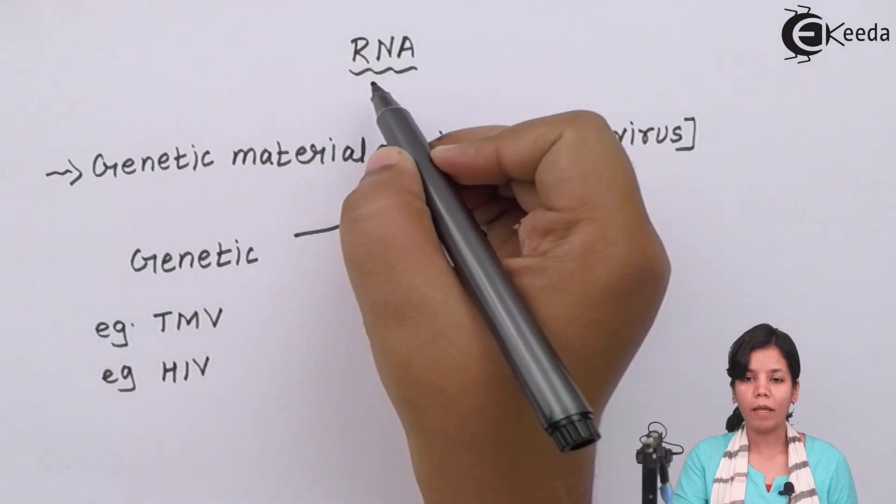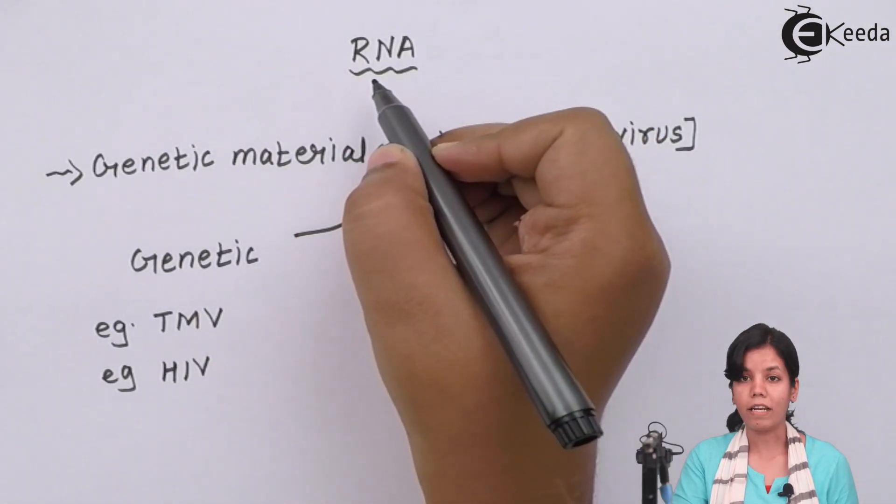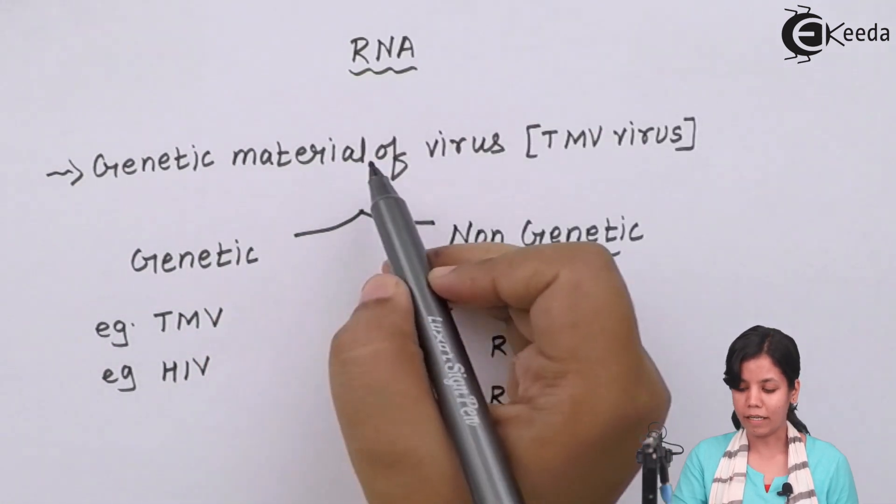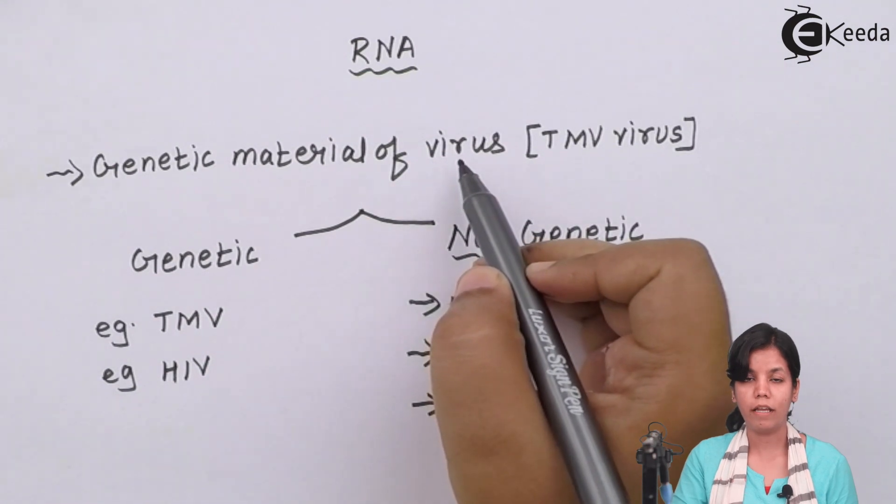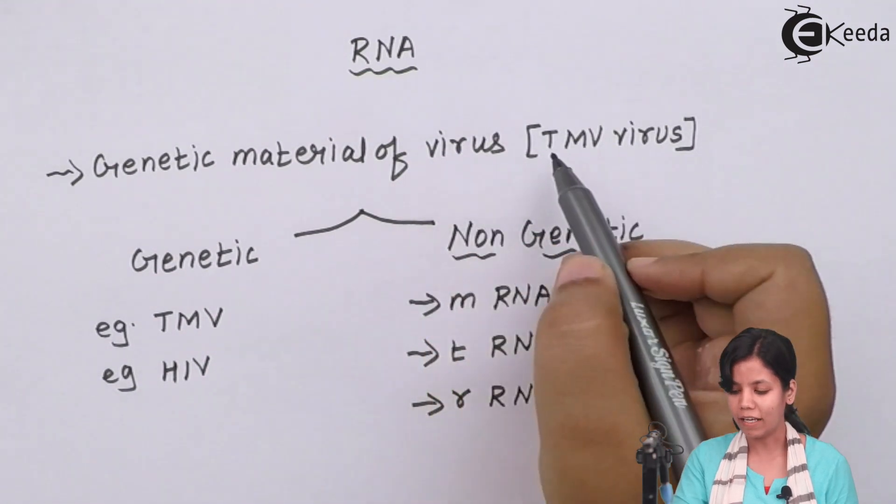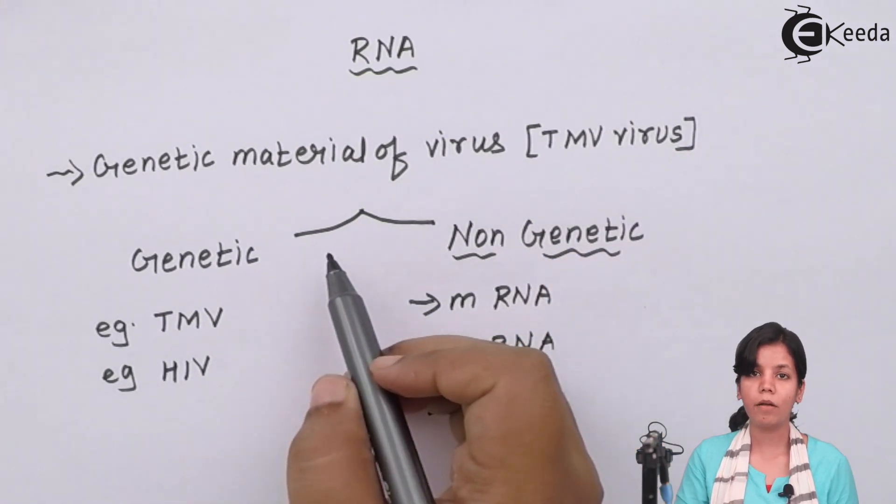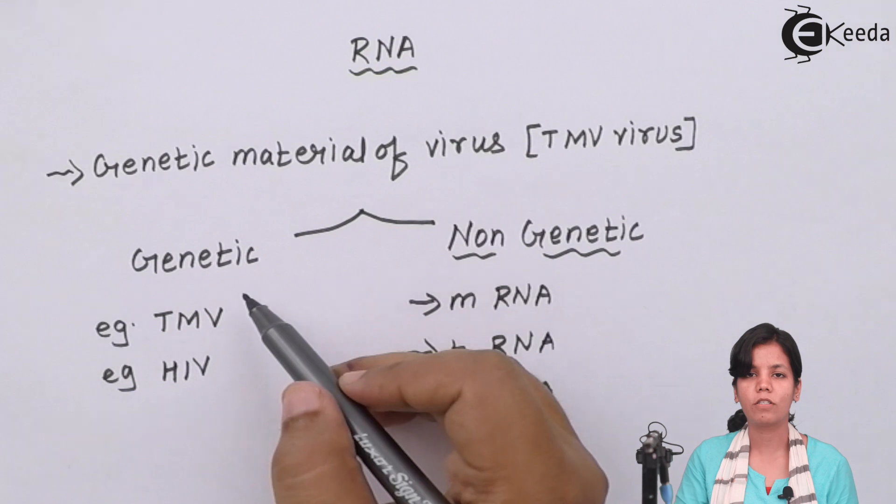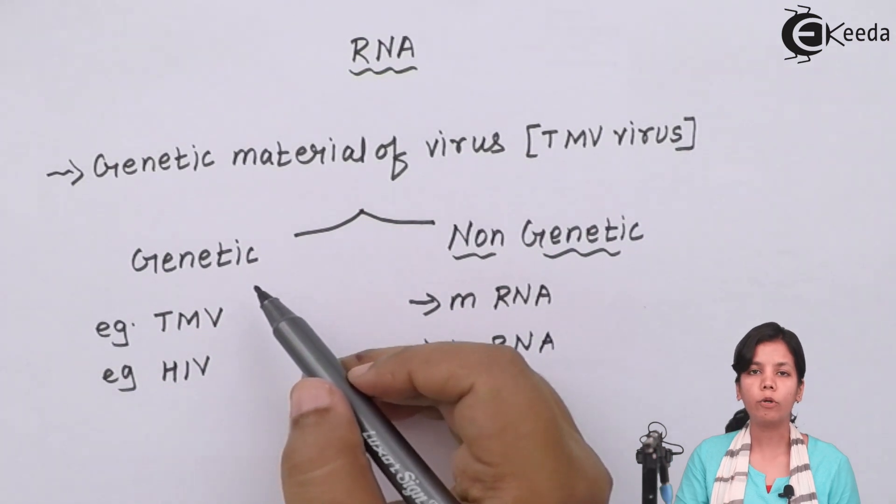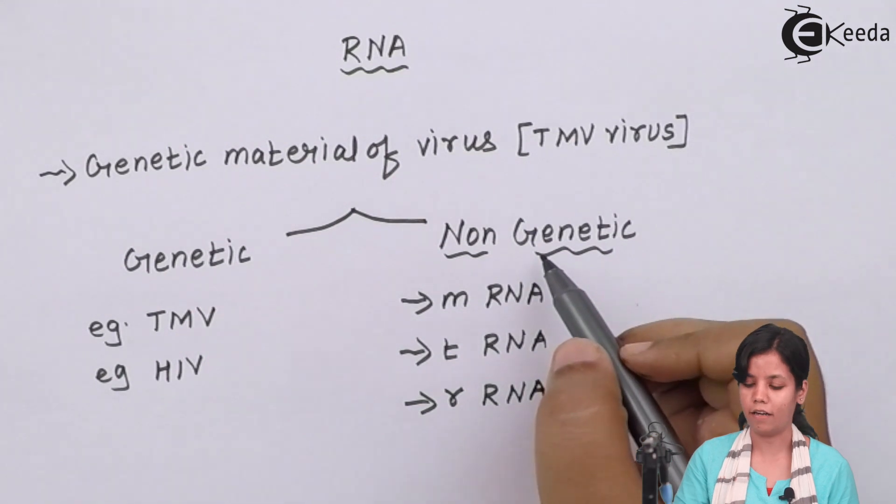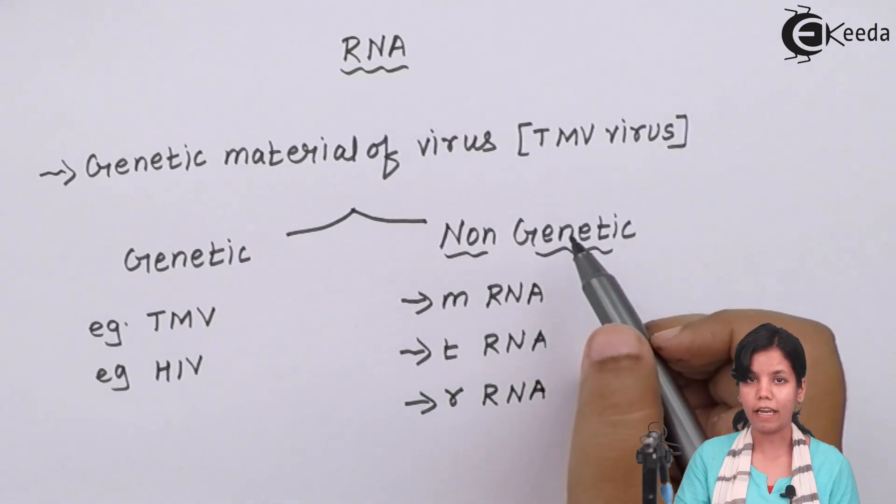RNA or ribonucleic acid, when I say RNA it is single-stranded. RNA is basically genetic material of viruses. An example of this is TMV or tobacco mosaic virus. Now RNA can sometimes be genetic also. That is the reason you divide RNA into two types, that is genetic RNA and non-genetic RNA.